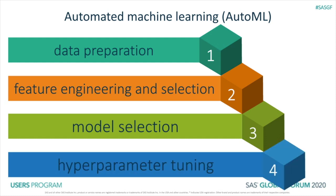With so many possible combinations of features, models, and hyperparameters to try, it can be very tedious to perform this all manually just by trial and error. So there are now platforms that provide this AutoML capability that can empower data analysts or citizen data scientists by giving them a start at a machine learning workflow, as well as enable advanced data scientists to spend more time on solutions to a problem, rather than being bogged down with these repetitive tasks.